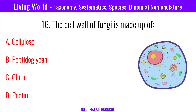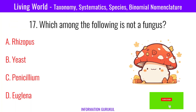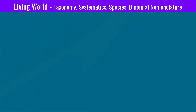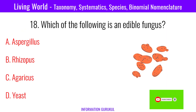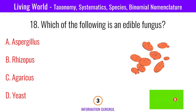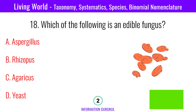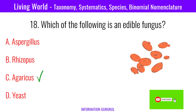The cell wall of fungi is made up of? Chitin. Which among the following is not a fungus? Spirogyra. Which of the following is an edible fungus? Agaricus.